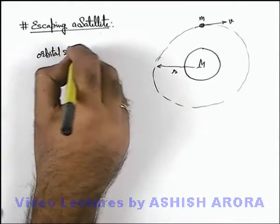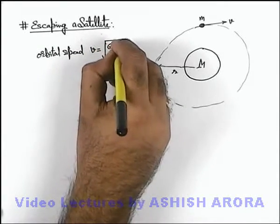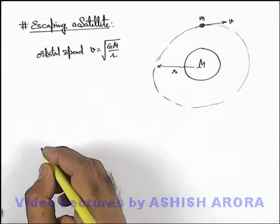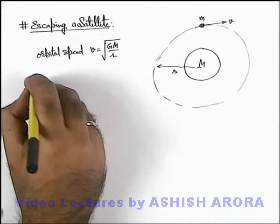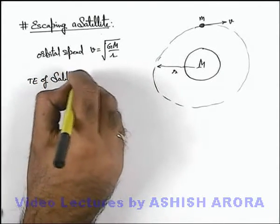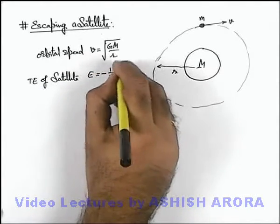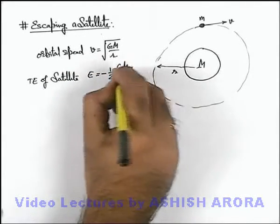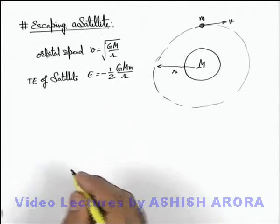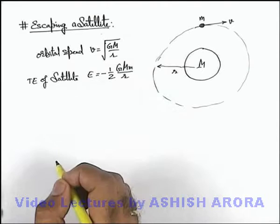Orbital speed we can write as root of GM by r. And if we talk about the total energy of satellite, this total energy we can write as minus of half GMm by r. And in this situation, potential energy is double of this, which we already discussed.